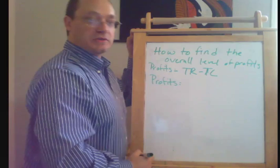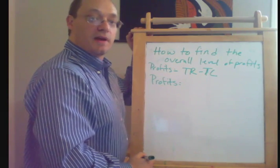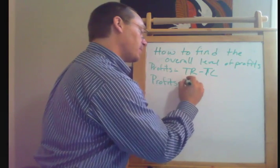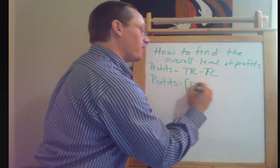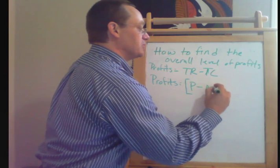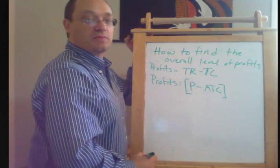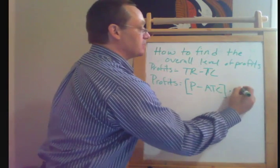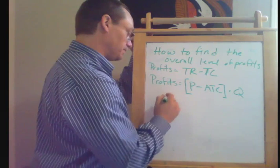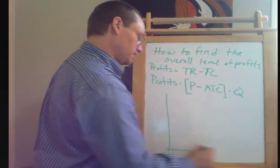And in this graphical version of it, we're going to rely on the other way of thinking about profits, which is that profits are the price you sell your stuff for minus the average cost of production times the number to sold.